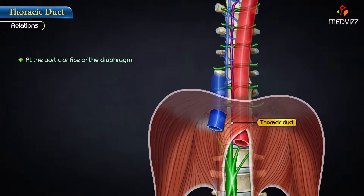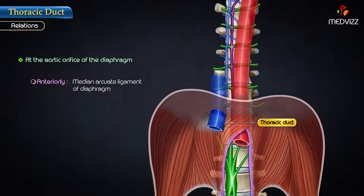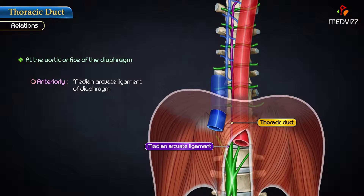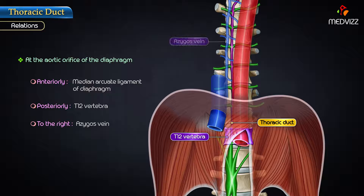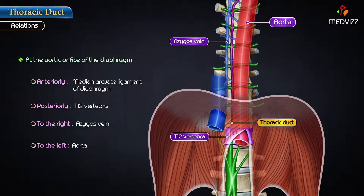Relations at the aortic orifice of the diaphragm. Anteriorly: the median arcuate ligament of the diaphragm. Posteriorly: the 12th thoracic vertebra. On the right: the azygous vein. On the left: the aorta.